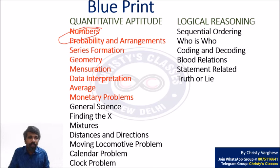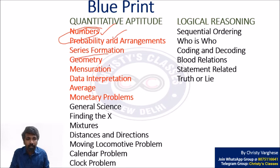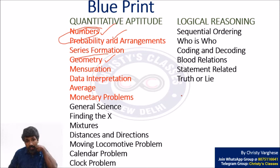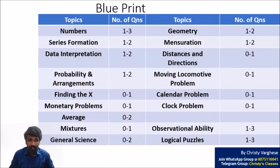Numbers will be discussed in three chapters. Probability and arrangement is in three chapters. Series formation — three chapters. Geometry — two chapters. All these topics will be covered in detail with discussion of theory, previous year questions, and practice questions.